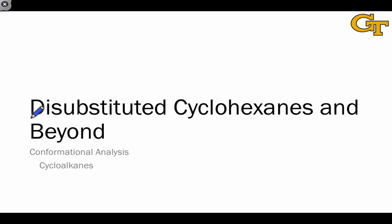Even though adding substituents to produce disubstituted and polysubstituted cyclohexanes complicates the conformational picture somewhat, we can use A values to deduce the most stable conformer of a polysubstituted cyclohexane. In this video, we're going to focus on translating line-angle pictures or top-down pictures of cyclohexanes into their most stable chair forms, and think about how to determine axial and equatorial substituents and how to determine the most stable conformer using A values as a guide.